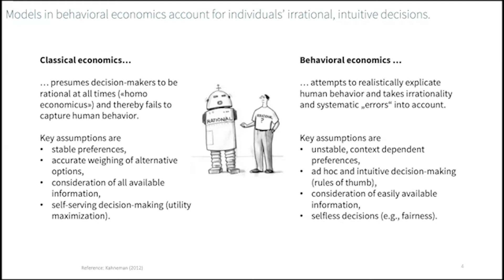Key assumptions suggest preferences are unstable and depend on context and situation. You may have noticed that you end up with different stuff in your shopping cart depending on whether you were hungry when you went grocery shopping or not. Decisions we make are often ad hoc and based on our intuition. We like to use rules of thumb or mental shortcuts to come to a decision. Also, we usually rely on information that is easily available. And sometimes our decisions are not self-serving — for example, when we act out of fairness or altruism.